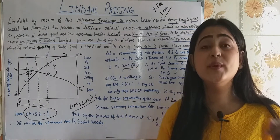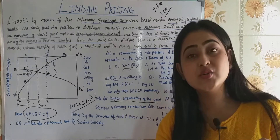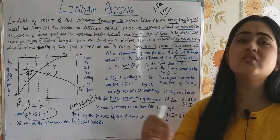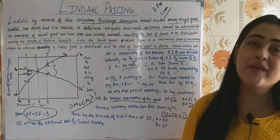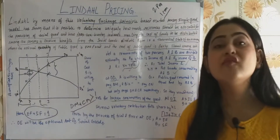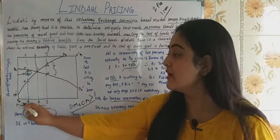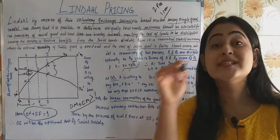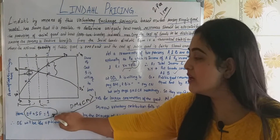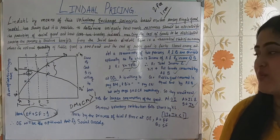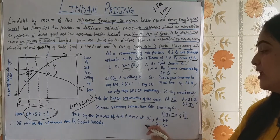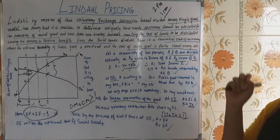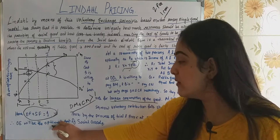By this trial and error process, we will reach a point where we find the socially optimal level of the product that has to be supplied. At quantity OE, A is willing to pay EF and B is willing to pay SF, and the sum equals the cost — that is, the sum equals one. Thus, by the process of trial and error, OE is found to be the optimal amount of social good desired by the market.